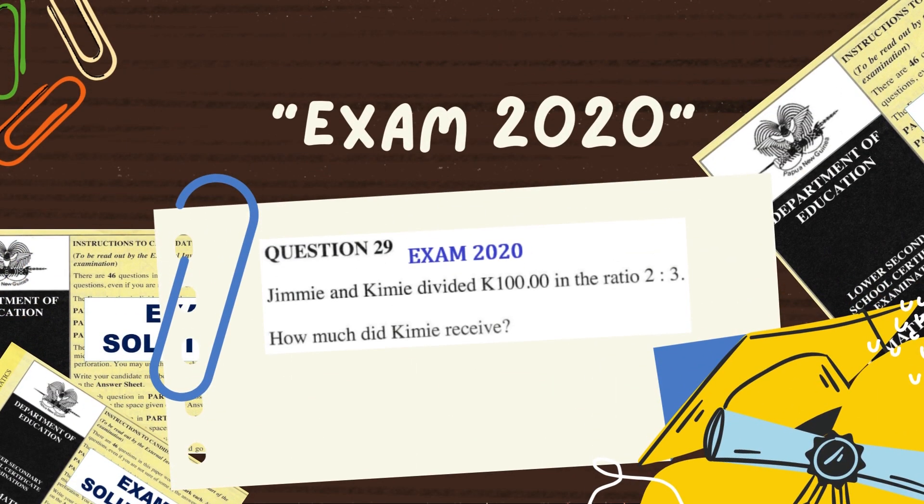Likewise, in the 2020 exam, question number 29, the question asked was: Jimmy and Kimmy divided 100 kina in the ratio 2 is to 3. How much did Kimmy receive?